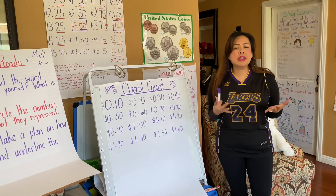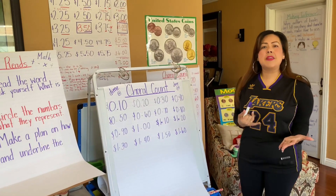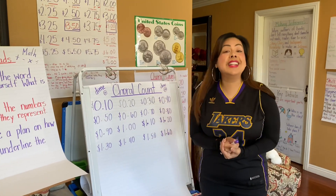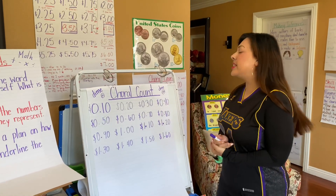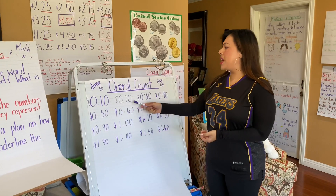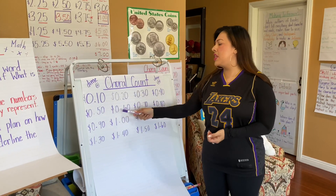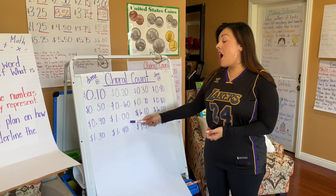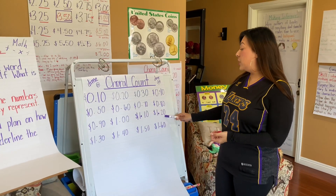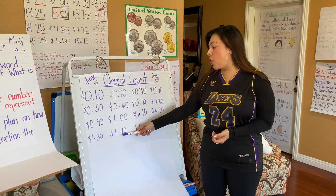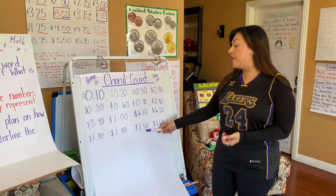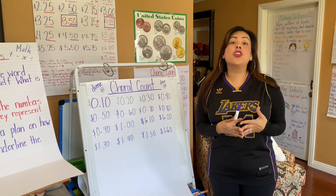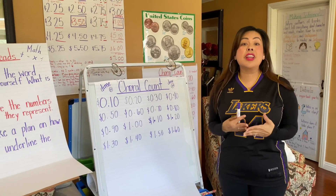So some of you are thinking, yeah, this is the same thing as counting by tens — and you're right, because a dime is $0.10. So let's count by tens: $0.10, $0.20, $0.30, $0.40, $0.50, $0.60. That's the same pattern, boys and girls. You're correct — counting by tens.